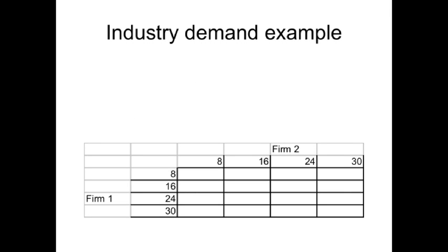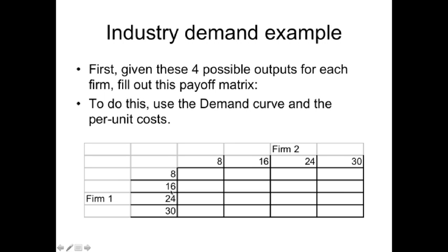Price equals 50 minus the quantity, and the per unit cost is $2. In this payoff matrix, I have different outputs that each firm could offer: 8, 16, 24, and 30. What I'd like you to do is use the demand curve and the per unit cost. Remember that profit equals total revenue minus total cost for each firm. Fill in the profit to firm 1 and the profit to firm 2 for each of these 16 possible outcomes, where each firm produces 8, 16, 24, 30, or some combination in between.